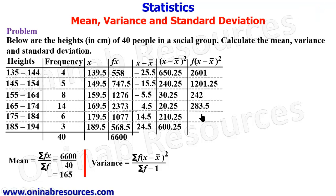14 times 20.25 gives 283.5. 6 times 210.25 gives 1261.5. 3 times 600.25 gives 1800.75. So that is that for f into (x - x̄)², multiplying the second column here by this column.